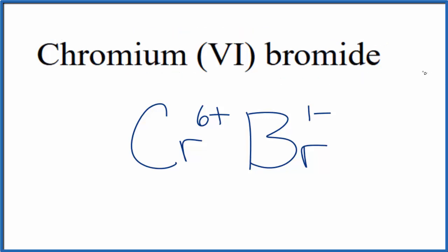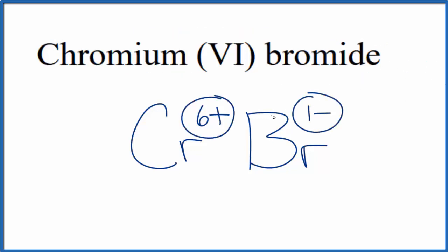Chromium (VI) bromide is neutral. We don't have the word ion after it. So these charges need to add up to zero, giving us a net charge of zero.